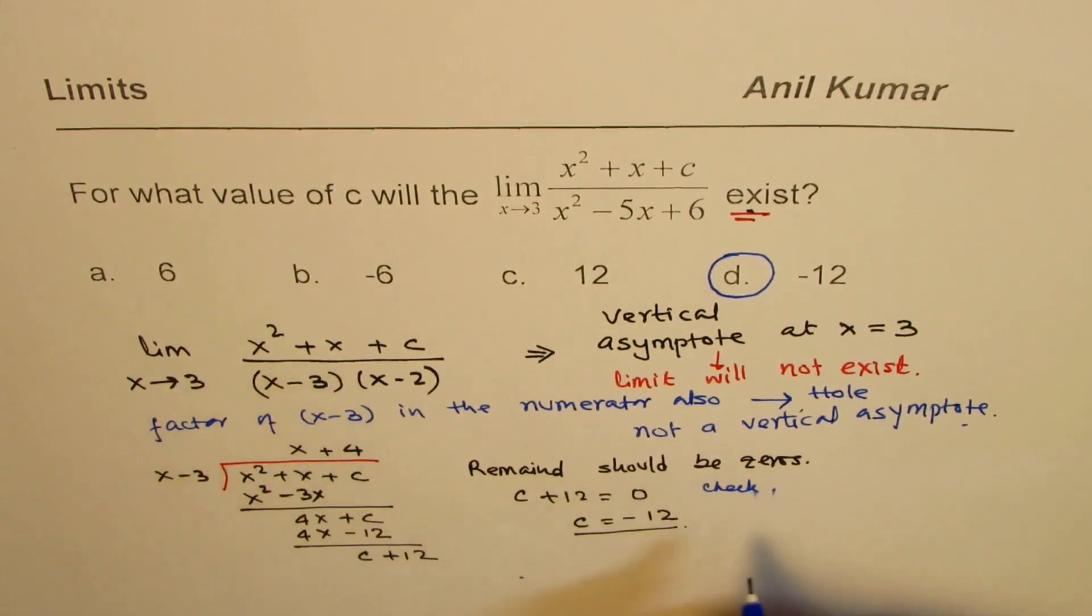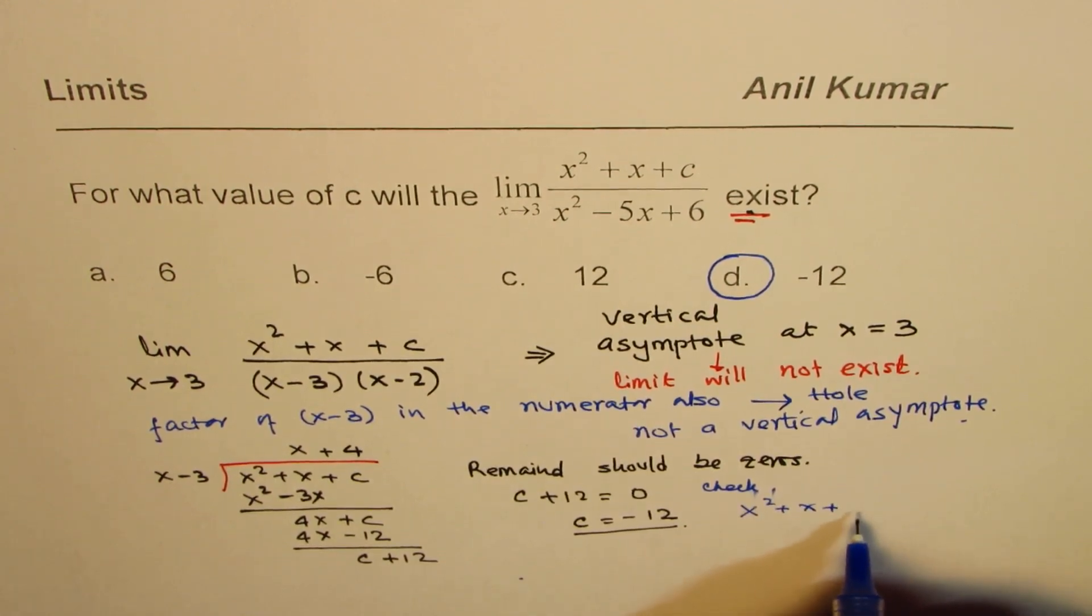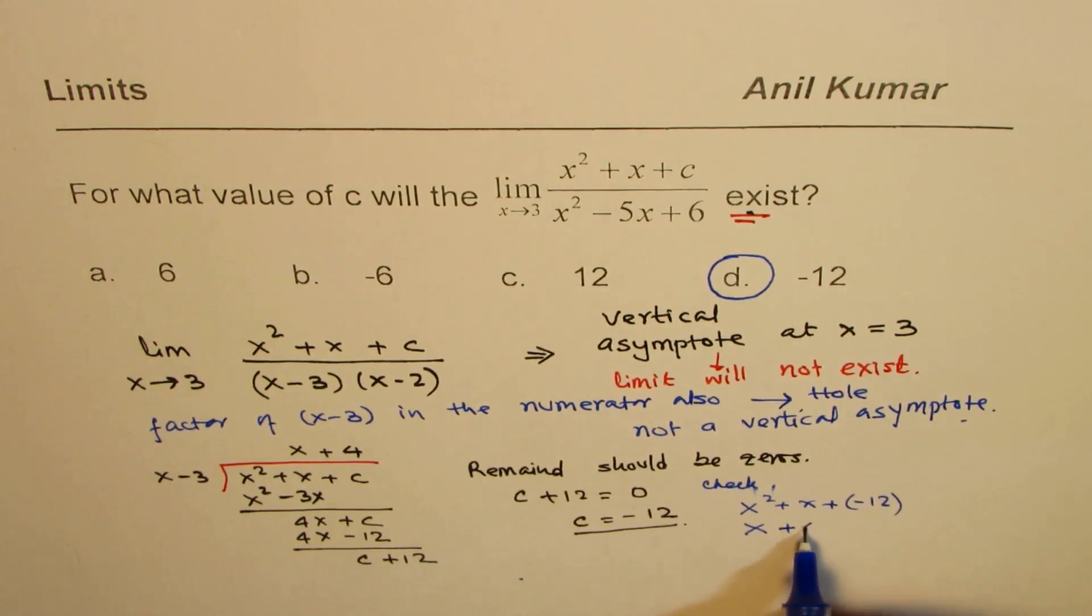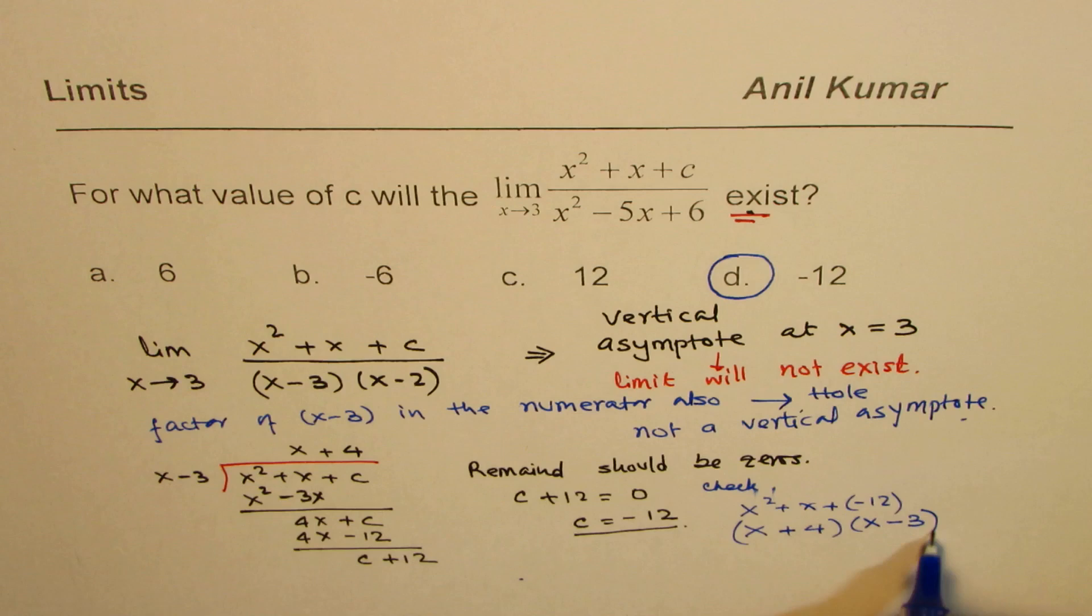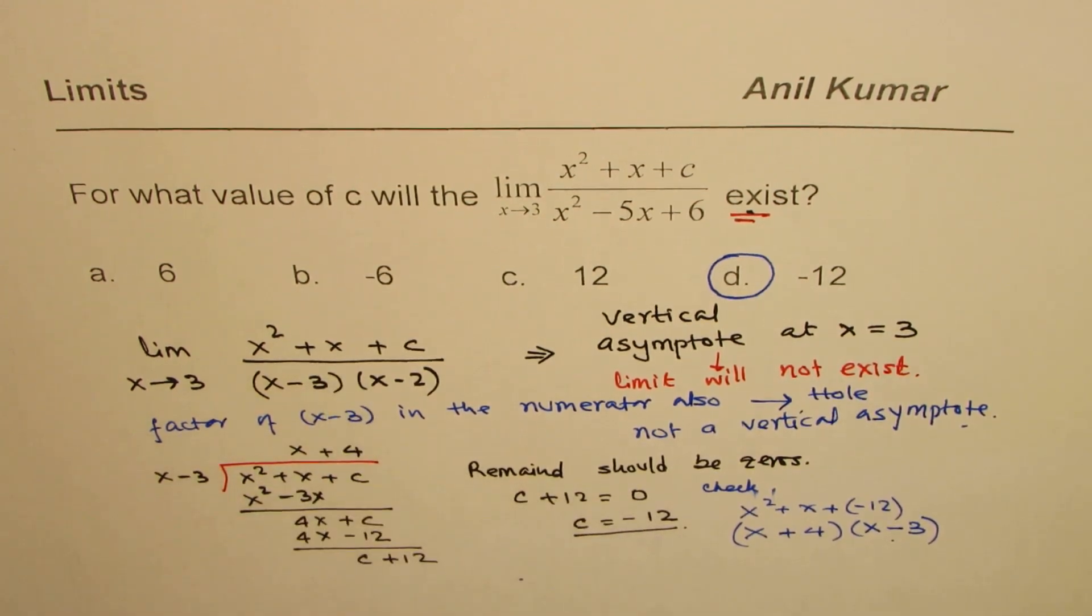Now, let me replace c with minus 12. What do we get? We get x squared plus x minus 12. Now, to get minus 12, we could factor this with x plus 4 times x minus 3. Do you see that? So x minus 3 now is a factor of numerator also.